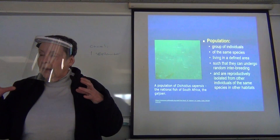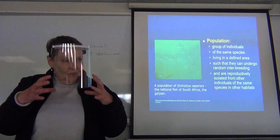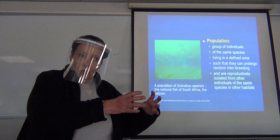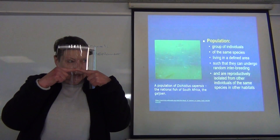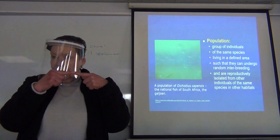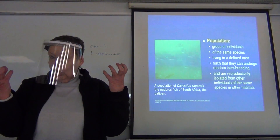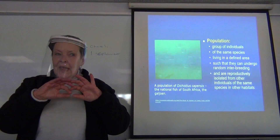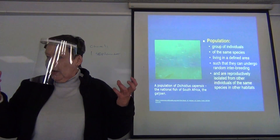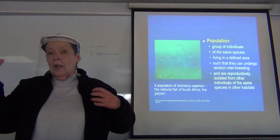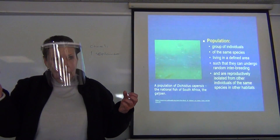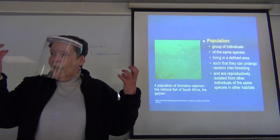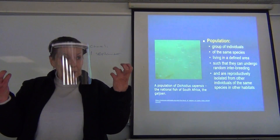If you've got two game reserves near Kruger Park, both fenced with electric fences, each with impala — unless those impala can interbreed, they are different populations. If they are reproductively isolated from each other — whether by distance, a fence, or whatever — they are different populations. Within each reserve, the impala can interbreed, so each reserve has its own separate population of impala.